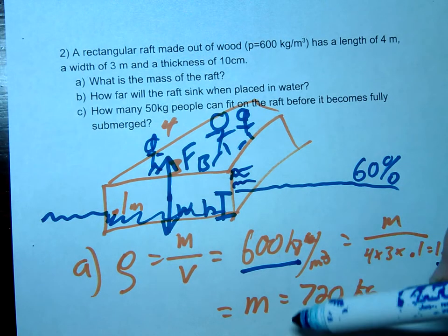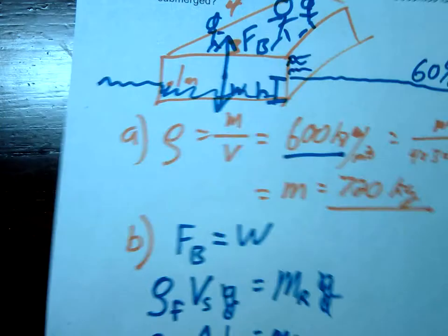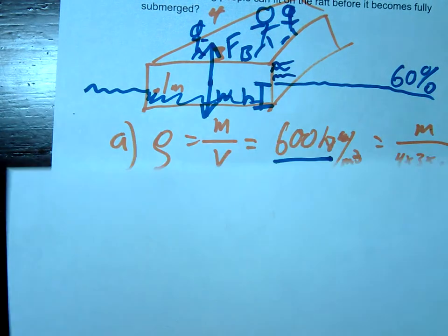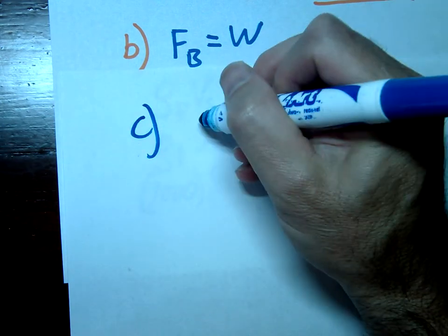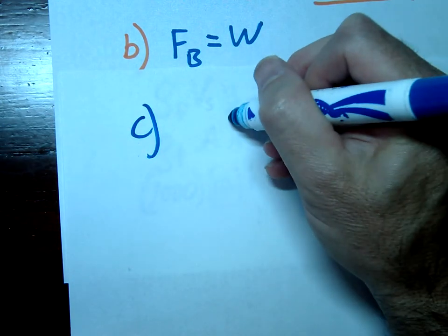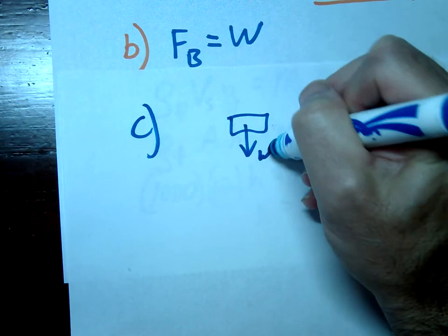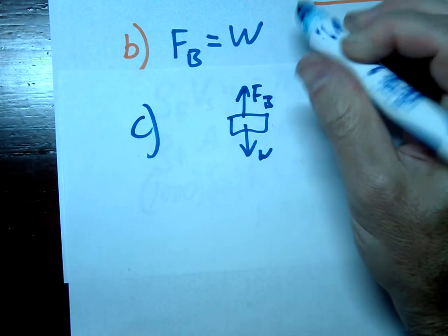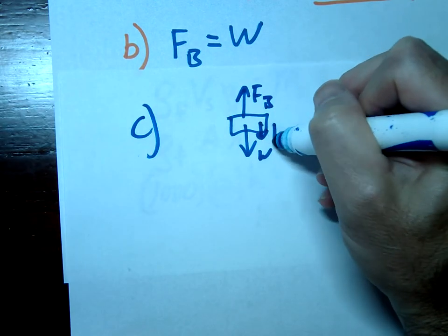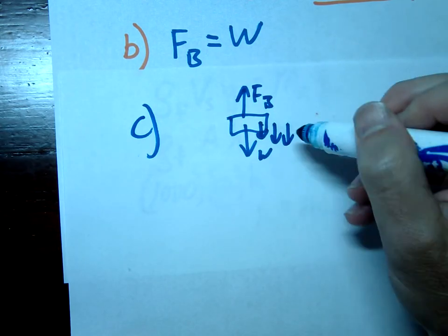So the question is how many people can fit before that happens? So again our relationship here is, well if you look at our FBD again we have the weight and we have F buoyancy, but this time we're going to throw a bunch of people on here, so we're gonna have a bunch of weights going down.